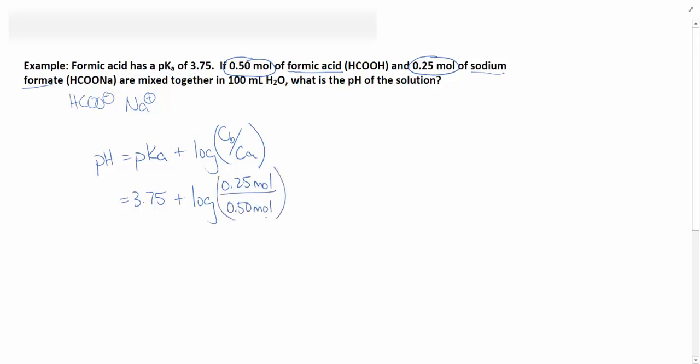You could also calculate concentrations and put them in here instead of the number of moles. However, since the volume is the same for both the conjugate base and the conjugate acid, 100 milliliters, the volumes are just going to cancel out. So it's only for a buffer that you're able to ignore these volumes and just use moles.